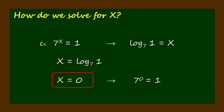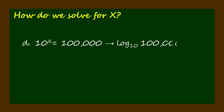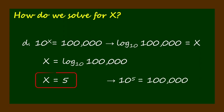10 to the x power equals 100,000. It can be written in logarithmic form as the logarithm of 100,000 to the base 10 equals x. And x equals the logarithm of 100,000 to the base 10. In this case, x equals 5 because 10 to the 5th power equals 100,000.